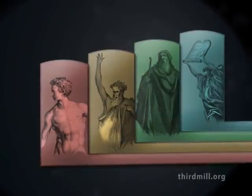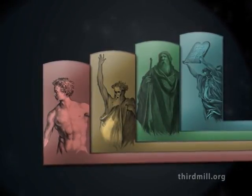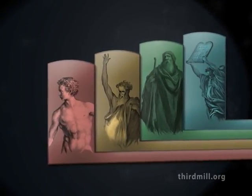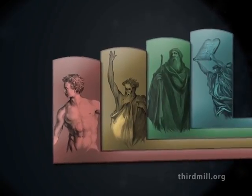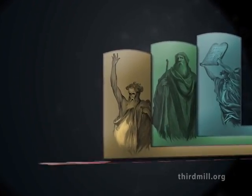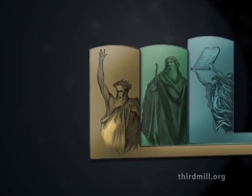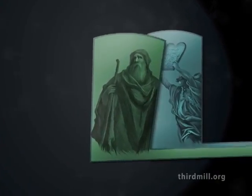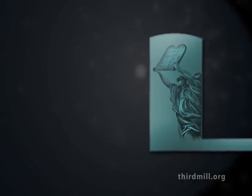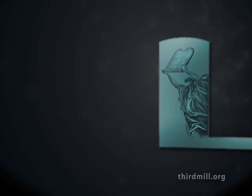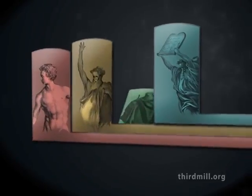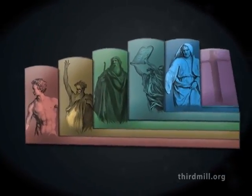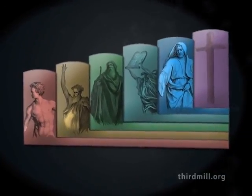Now, in a moment we're going to add some qualifications to what we have seen, but these examples indicate that later Old Testament covenants did not discount the authority of what God had revealed in earlier covenants. On the contrary, the theological structures of earlier covenant epics had abiding authority in later epics.